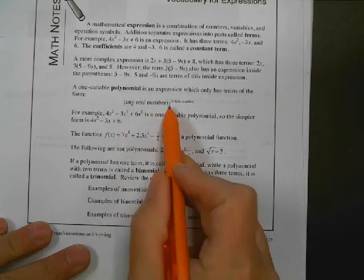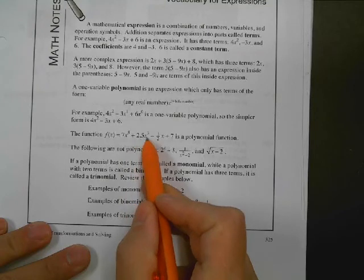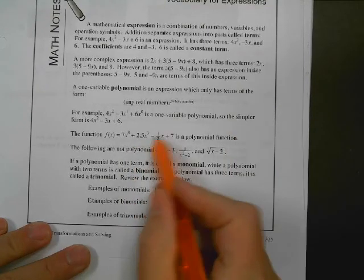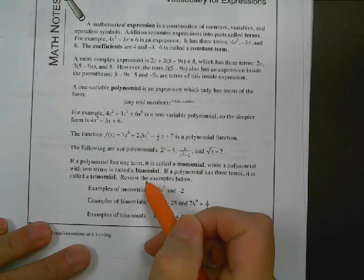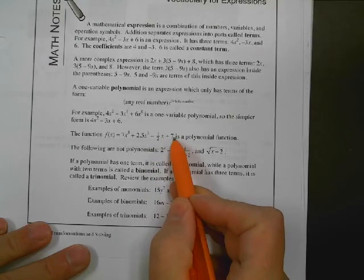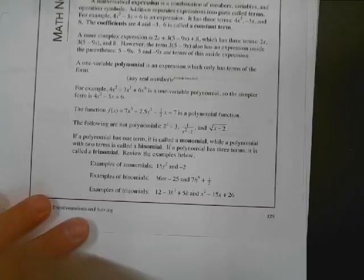So here we've got a polynomial here. 7x to the 5th. So any real number, x to a power. 2.5, that's a real number. x to the 3rd. That works. 1 half, that's a real number. x to the 1st. And then remember, 7, this would be x to the 0. So that one would work. Okay.